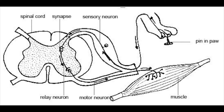For both humans and animals this is an extremely important action because it helps us avoid danger. It happens extremely fast — however it is a fairly long process which happens in a matter of milliseconds. The example I'll be using today is if we touch a hot hob.